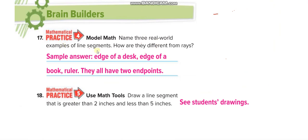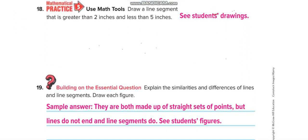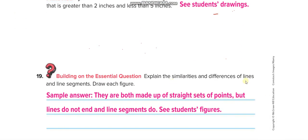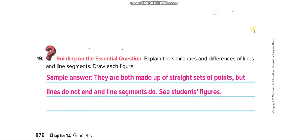Name three real-world examples — you can write your own. Now explain the similarities and differences of lines and line segments: a line extends on both sides while a line segment has only two endpoints. They are both made up of a straight set of points, but a line does not end because it keeps extending, while a line segment does end. I hope you understand the lesson — thank you so much and have a nice day!